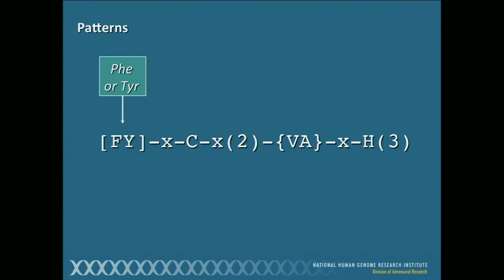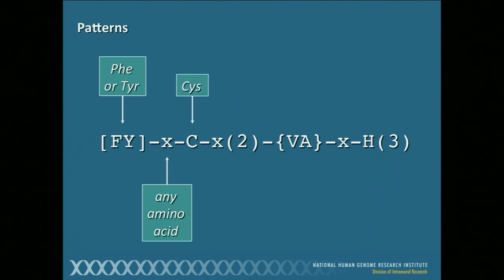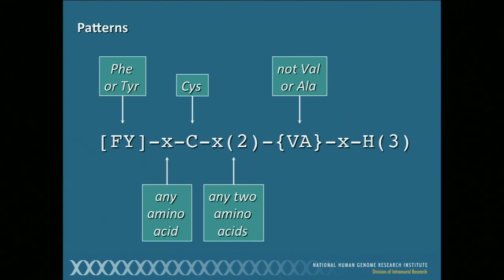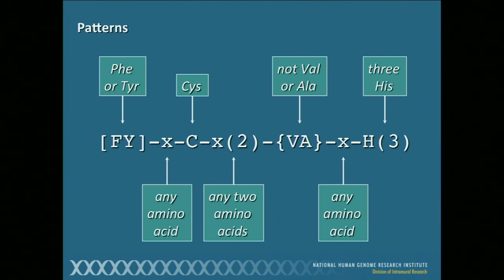Let me help you decipher these codes. Square brackets around amino acids means one of them — so the first position has either phenylalanine or tyrosine. An X means any amino acid can exist. A C by itself means an obligatory cysteine. X followed by a 2 means any two amino acids in those positions. Curly brackets mean none of those residues — so any residue except valine or alanine at that position. H3 means three histidines in a row.